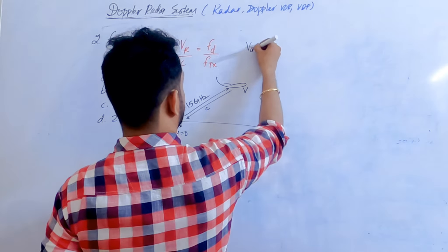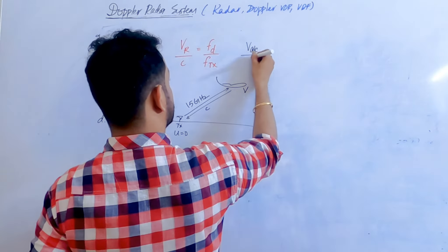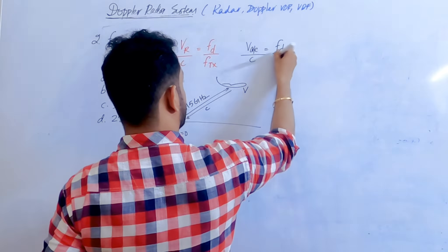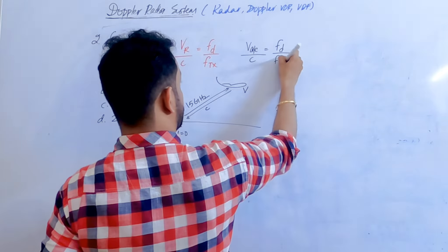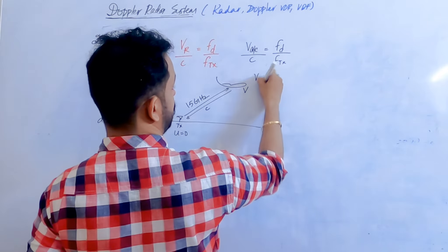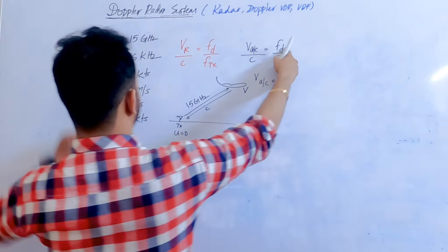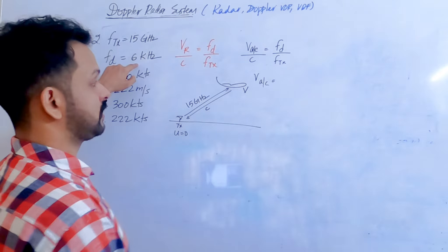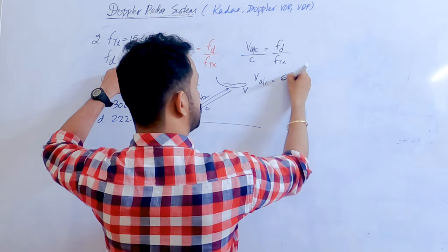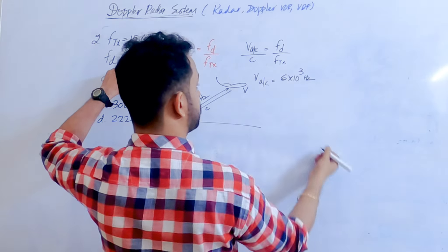The velocity of the aircraft divided by the speed of light equals the shift in frequency divided by the frequency of the transmitter. Therefore, velocity of the aircraft equals the shift in frequency, which is 6 kilohertz — that is 6 × 10³ hertz.